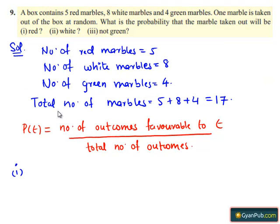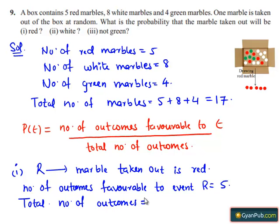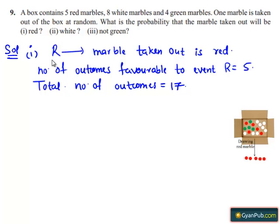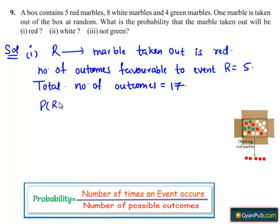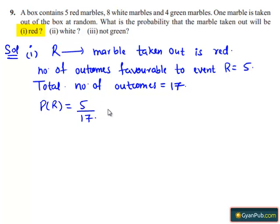Now let's see the first part. Let R be the event that the marble taken out is red. Number of outcomes favorable to event R equals the number of red marbles, which is five. Total number of outcomes equals the total number of marbles, which is 17. Probability of event R, that is P of R, equals five divided by 17. Therefore, the probability that the marble taken out will be red is five divided by 17.